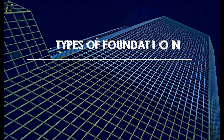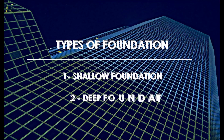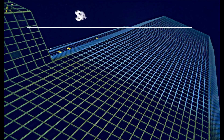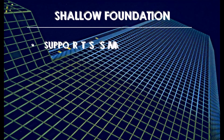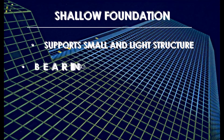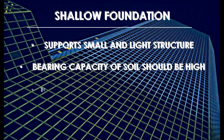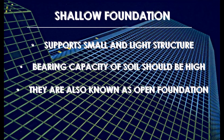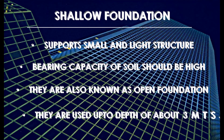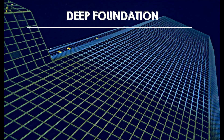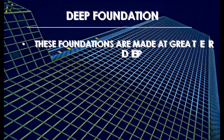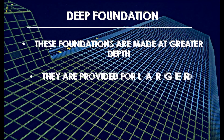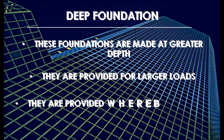Depending upon the bearing capacity of the soil and the depth of foundation required, there are two types of foundations: shallow foundation and deep foundation. Shallow foundations are footings which support small and light structures. They are also known as open footings, and are normally up to 3 meters depth, though it can be more in favorable conditions. Deep foundations are made at greater depths for buildings having larger loads where the bearing capacity of the soil is less.